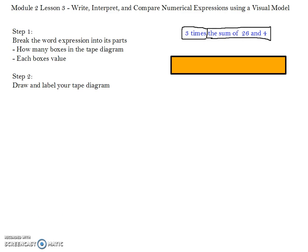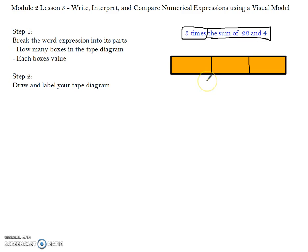Step 2 is you want to draw and label your tape diagram. I'm going to start with how many boxes. For this expression, we're going to have 3 boxes, so I'm going to draw 2 lines, breaking my tape diagram into 3 boxes. Next, I want to write how much each box is worth. Each box is going to be the sum of 26 and 4.